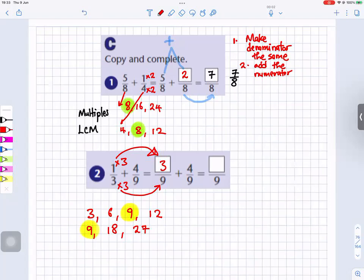Now what do we do next? We need to add the two numerators. So three plus four equals seven, and then there's the nine on there which we write. So that's the answer. Does that make sense?